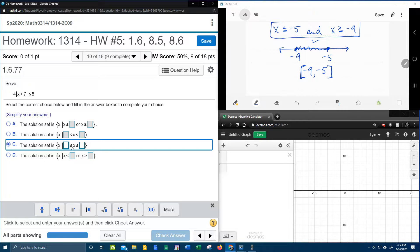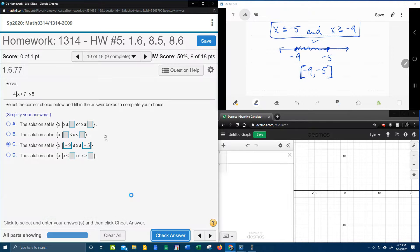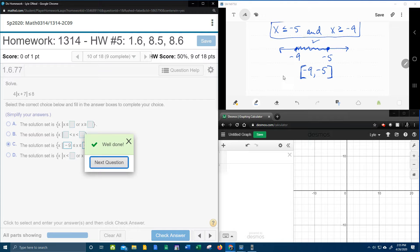And we know that x is greater than or equal to negative 9, but it's less than or equal to negative 5. And so there is that worked out. Notice in both set notation and interval notation.